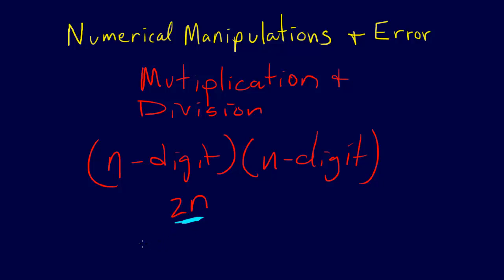And then we just normalize the result, and we don't lose the precision that we do in the other case. We still chop the result to n-digits. We have this 2n result and we still chop it to n-digits, but we've still got n-digits of precision.